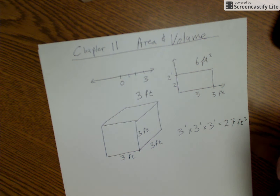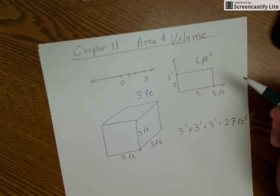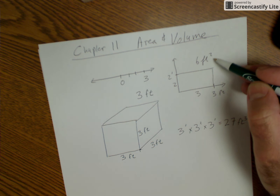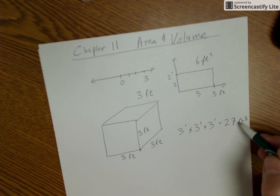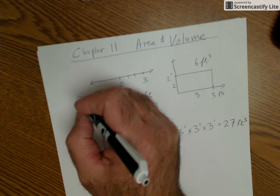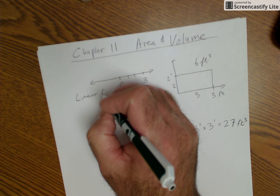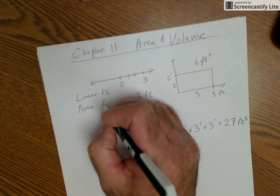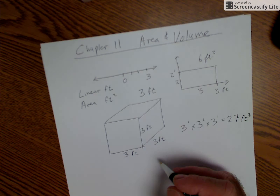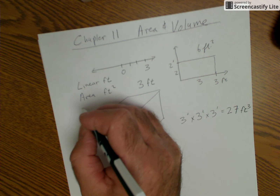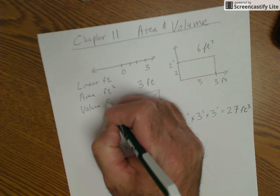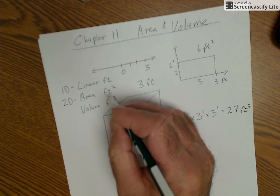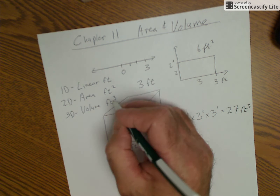So we're looking at area and volume. One thing I really want to note is your units tell you if it's one-dimensional — just feet; two-dimensional area — square feet; or three-dimensional — cubic feet, volume. A linear measurement is one-dimensional, feet only. An area is two-dimensional, square feet. A solid is volume, three-dimensional, cubic feet. So: 1D is linear, 2D is area, 3D is volume in cubic feet.